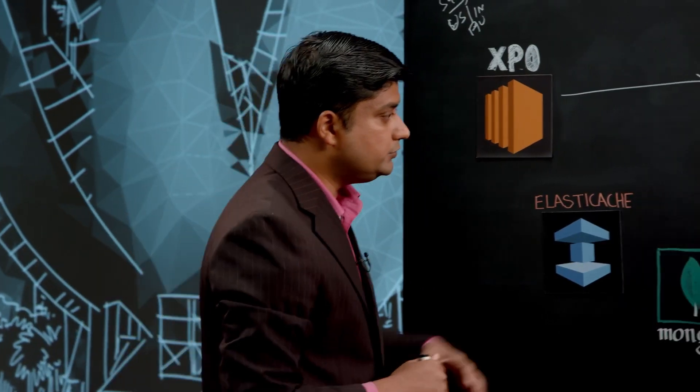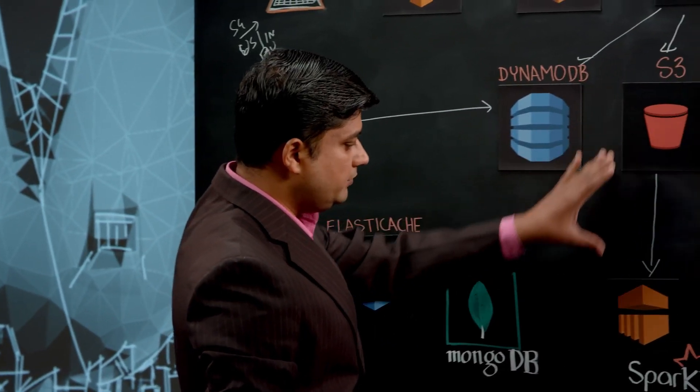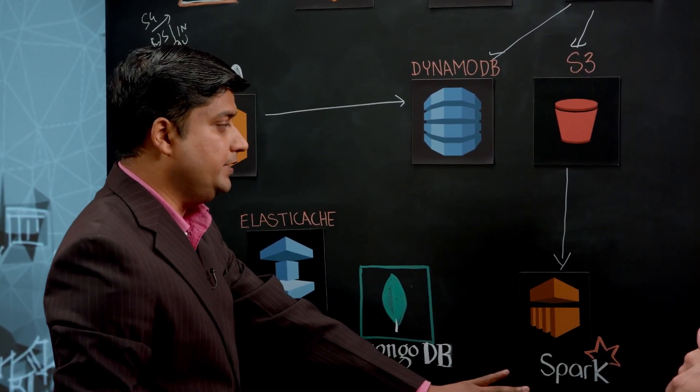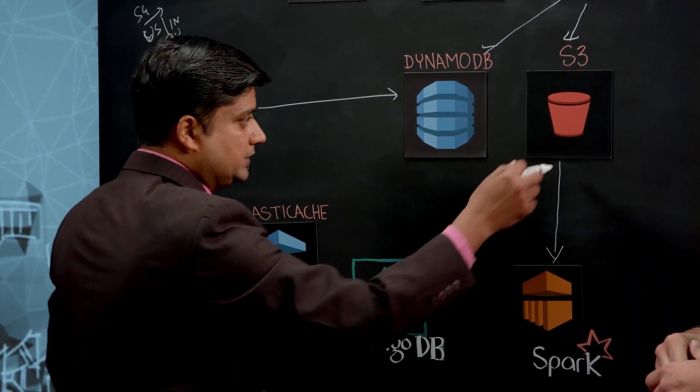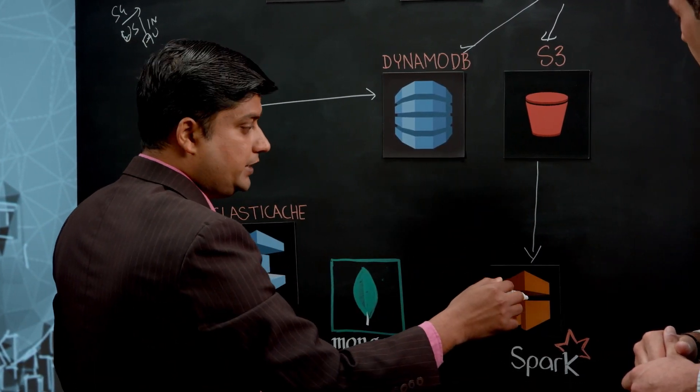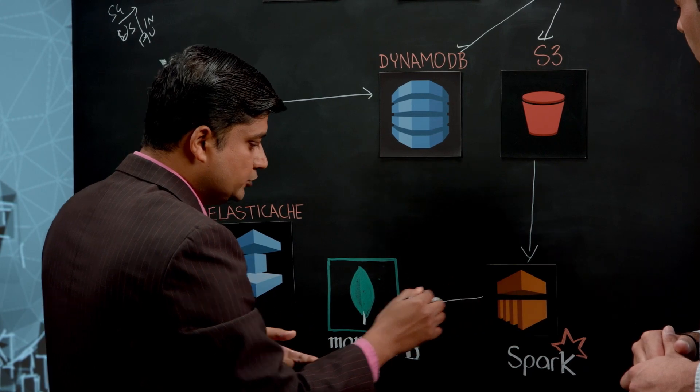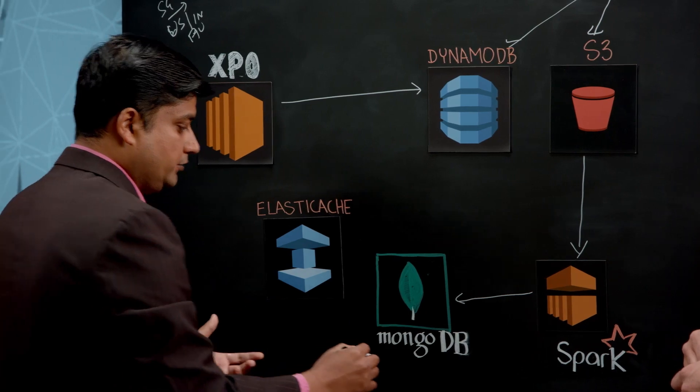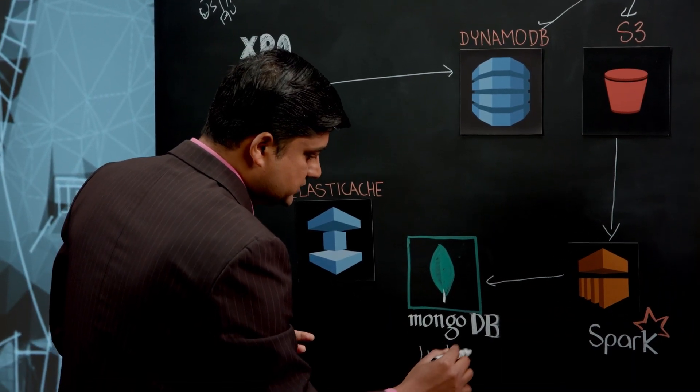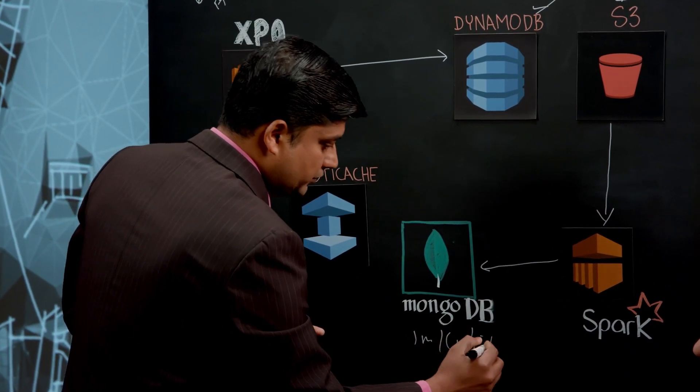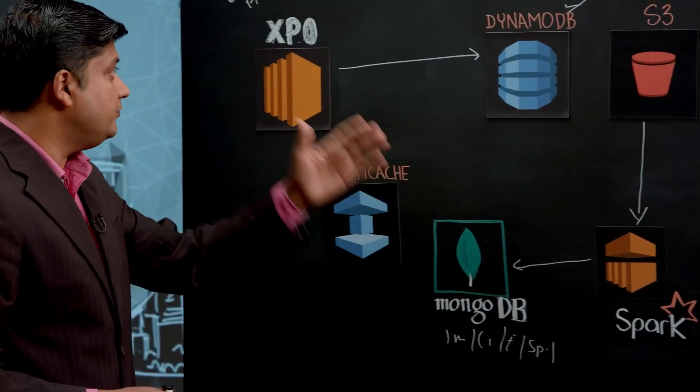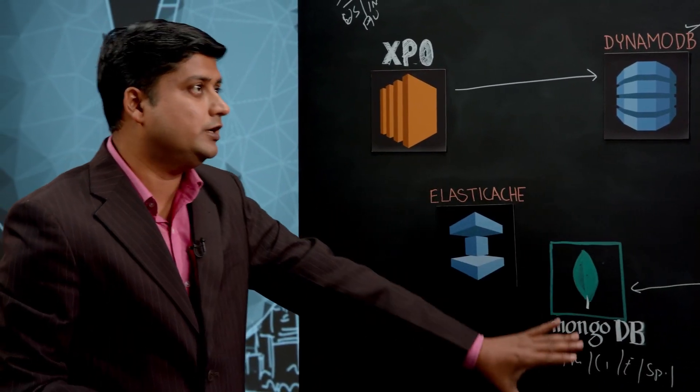Once the data goes to S3, we're using Amazon EMR service for Spark streaming. What it does is it pulls the data from S3, brings the data to streaming, and then starts processing that data and pushes it to MongoDB so that we can store the processed information. This is the real processing - you have impressions, you have clicks, engagement, you have spend, all sorts of key metrics which a person is looking at. All that data goes to the Mongo layer.